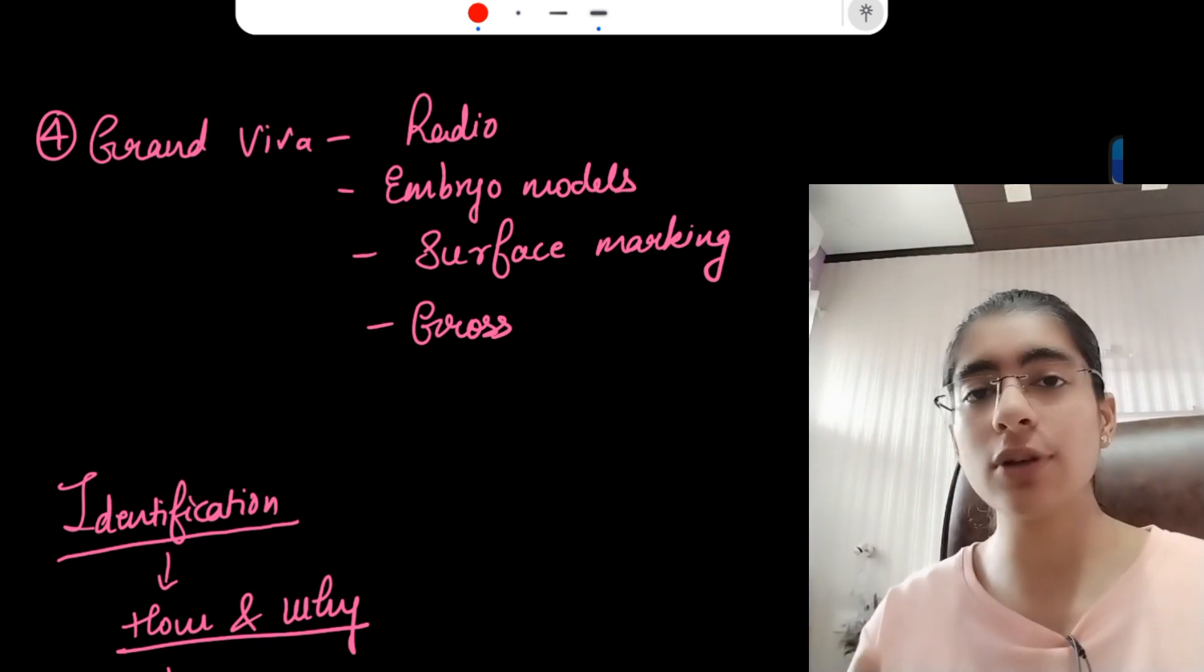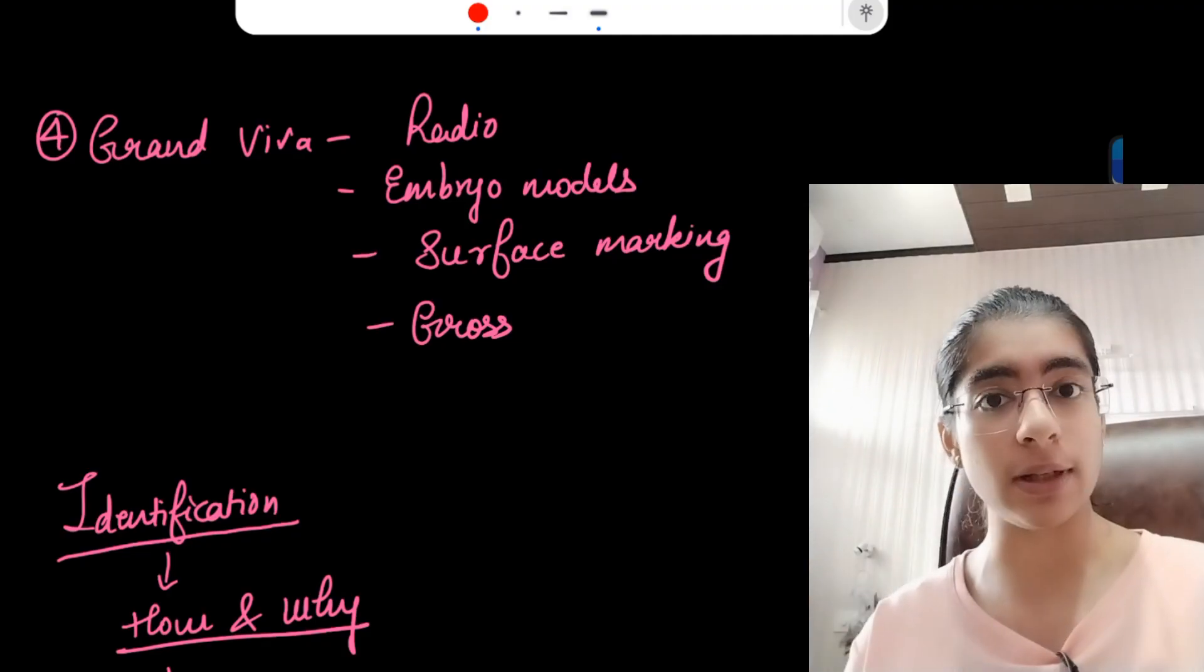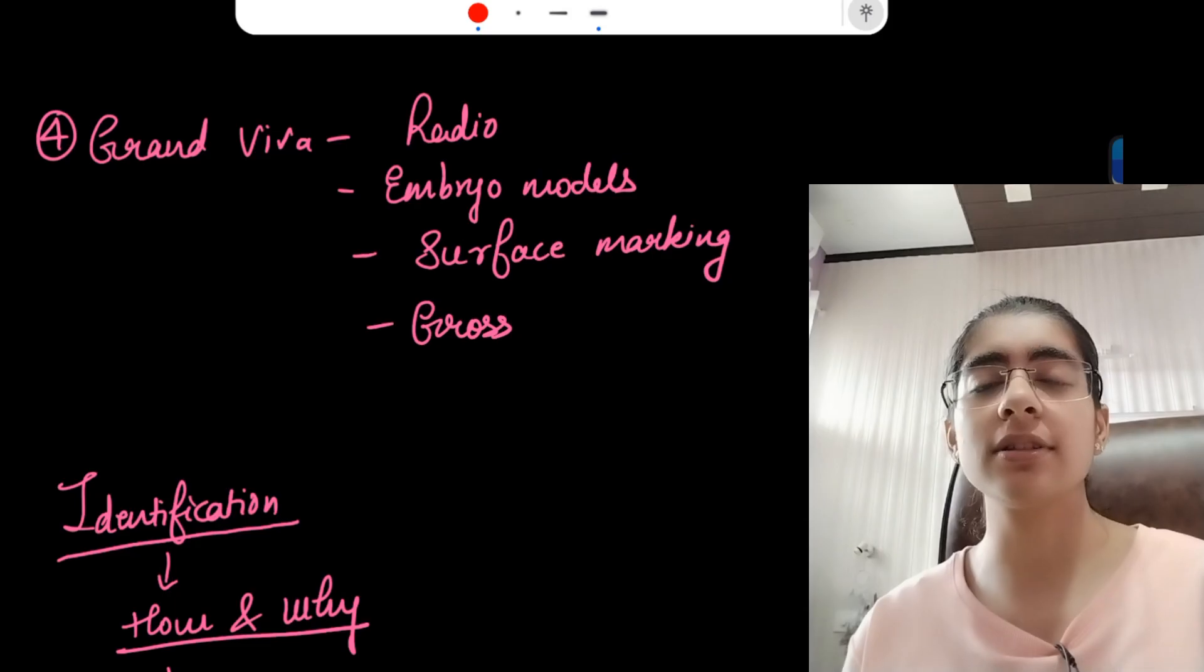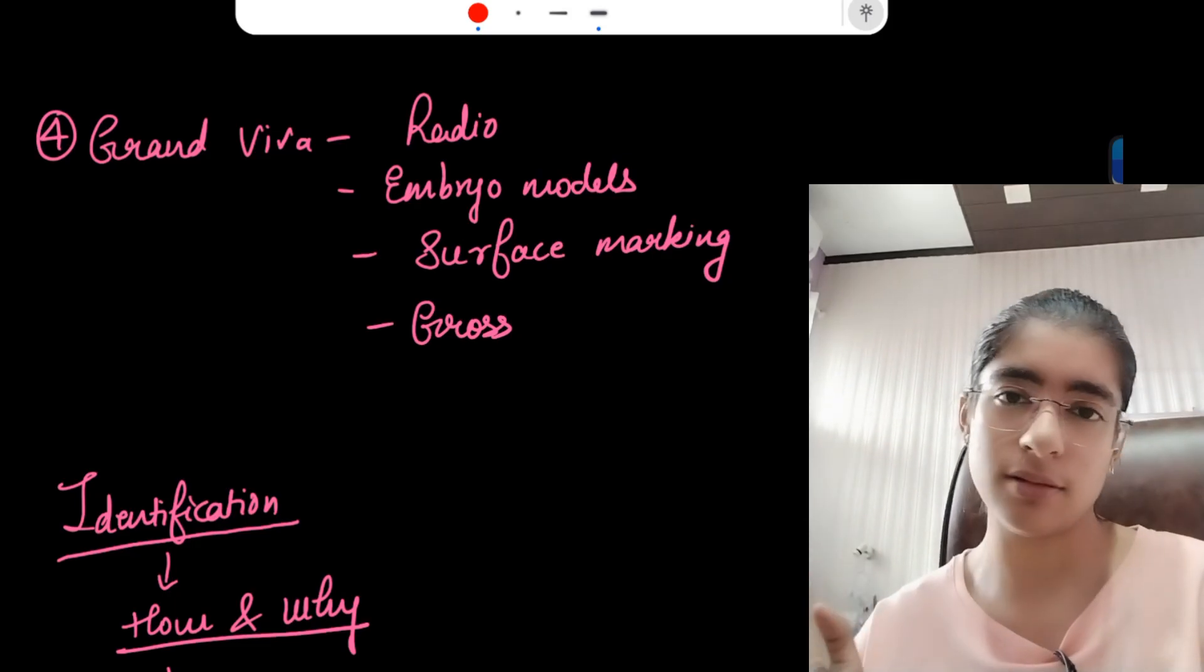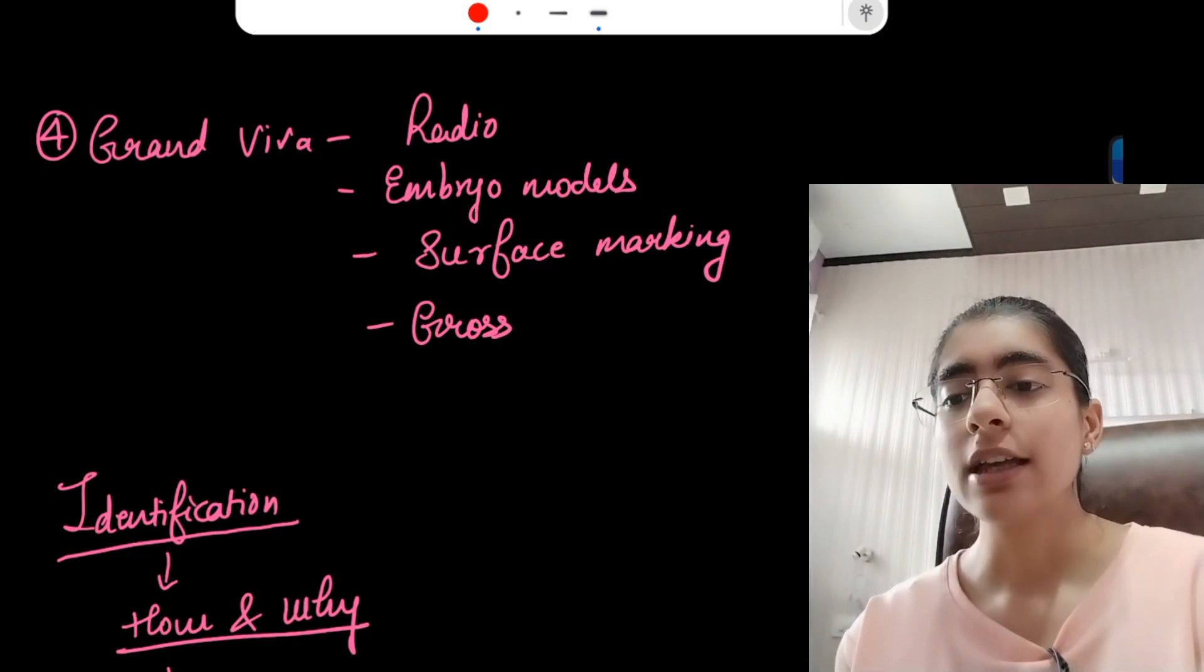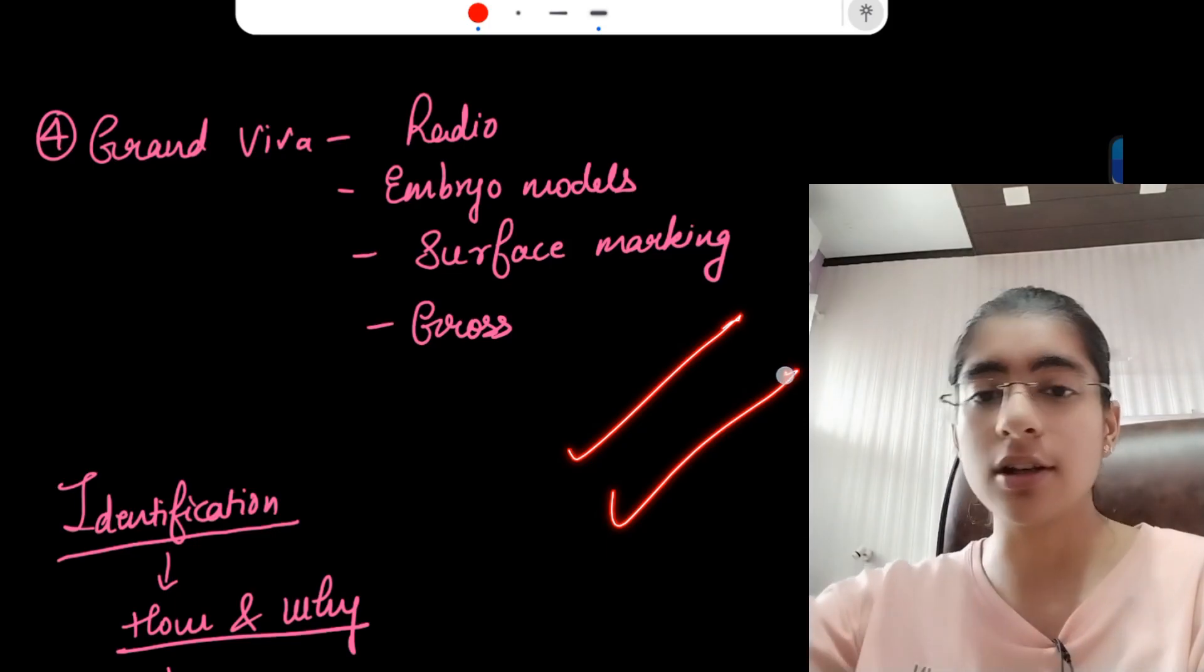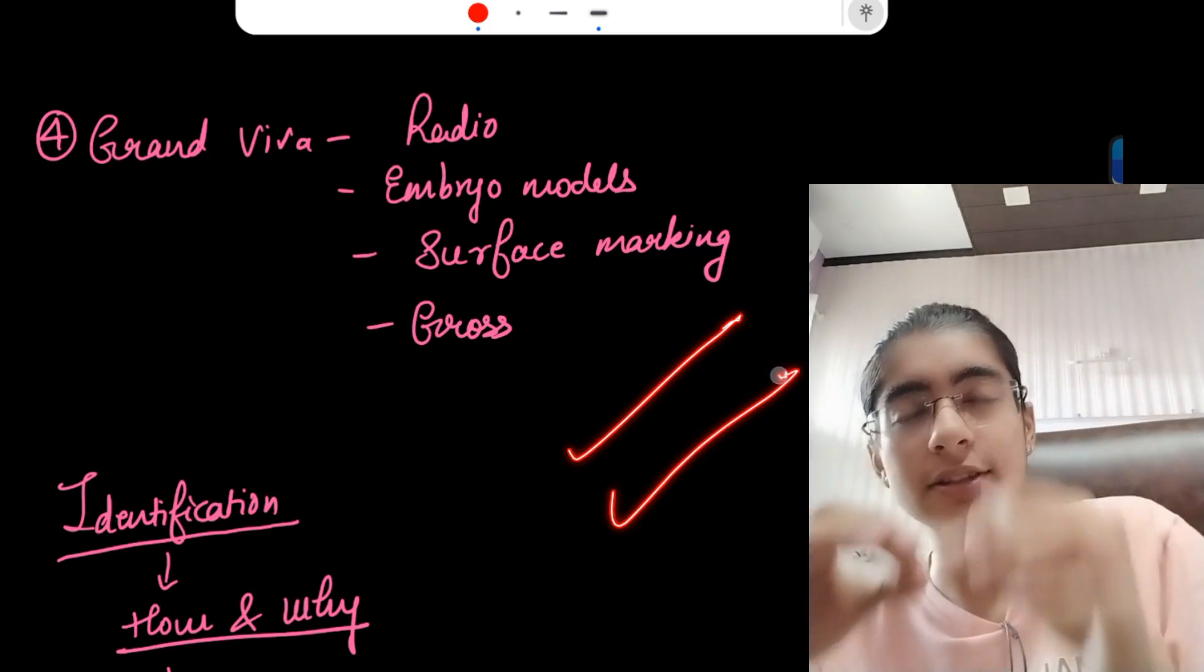If you have not done dissection and if you have not seen the specimens as well, then you can watch the YouTube videos. There are many YouTube resources like GP Pal, many anatomy practical resources. You can refer them, and if you have a basic idea of where is, like if you can locate the nerves in the brachial plexus.